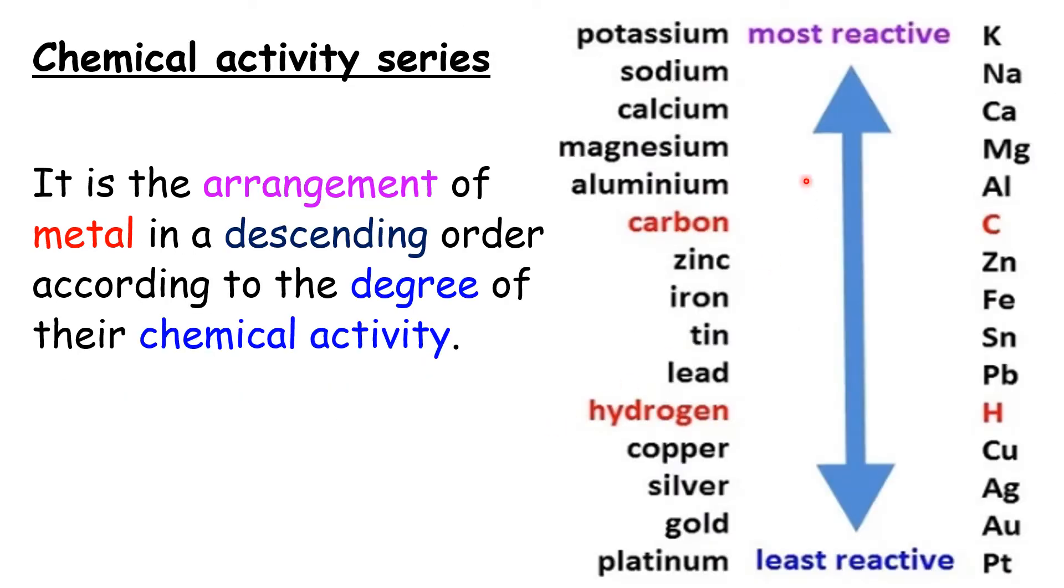This is the chemical activity series. As you can see, all of them are metals except hydrogen. It is arranged from the most active to the least active. The chemical activity series is the arrangement of metal in a descending order, from the most active to the less active, according to the degree of their chemical activity.